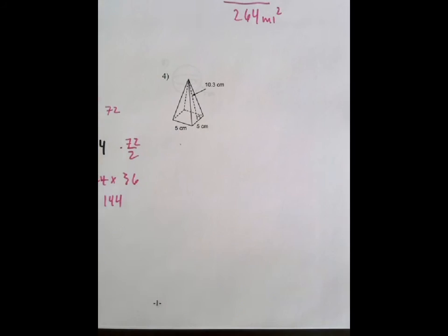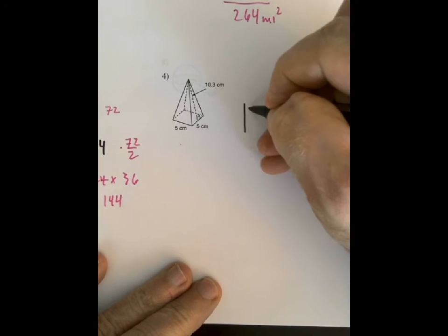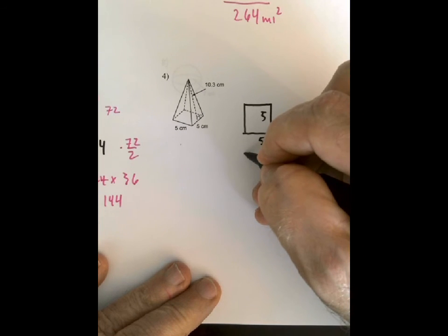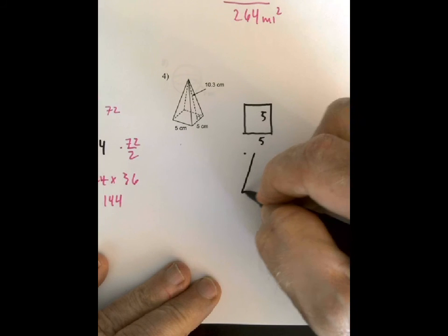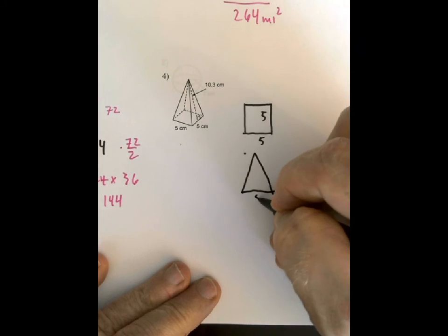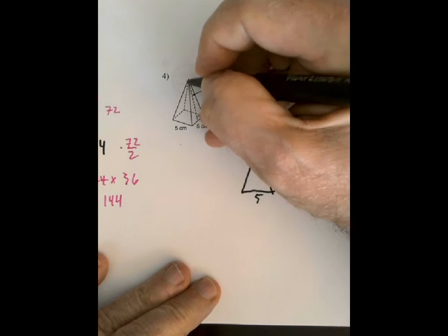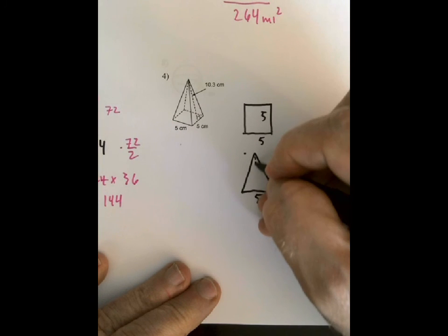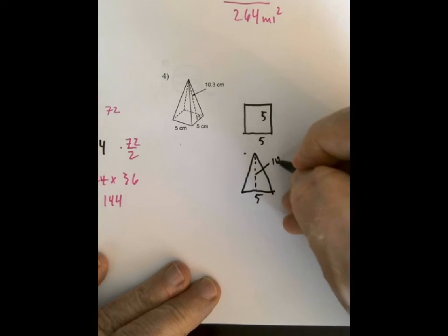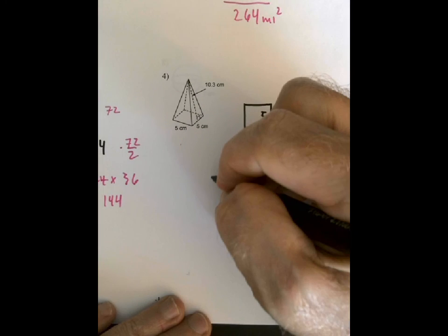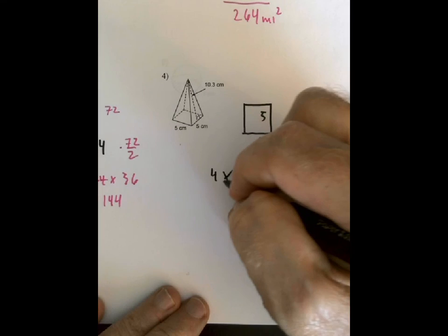Hopefully you've tried it by yourself. Here is our pyramid, it's got a square base and four triangular sides which are 5 at the base, and the slant height they call it, which for this pyramid, is 10.3. And then that's going to be times 4 because there's four of them.